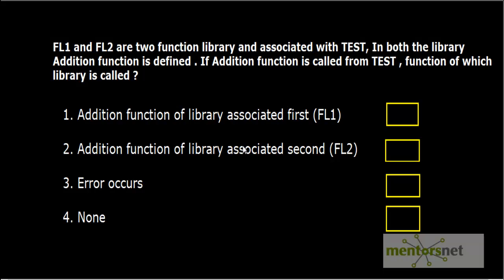Let's do some exercise based on our user-defined functions explanation. The question is: FL1 and FL2 are two function libraries associated with a test. In both function libraries, one addition function is defined. If this addition function is called from the test, which library's function is called? The options are: the addition function of the library associated first (FL1), associated second (FL2), an error occurs, or none of the above.